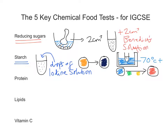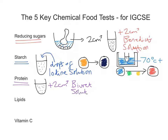Our third test is for protein, and for that we're going to use the Biuret test. We take a test tube of liquid unknown sample — again, if you've got a solid sample, break it up with a pestle and mortar and add water. We've got about two centimetres cubed of the sample in the test tube, and we're going to add to that about two centimetres cubed of something called Biuret solution.